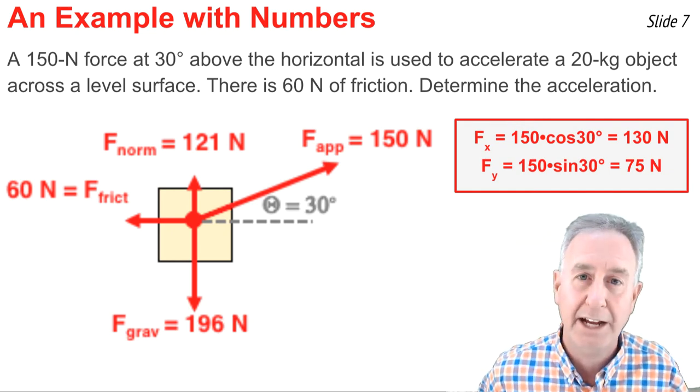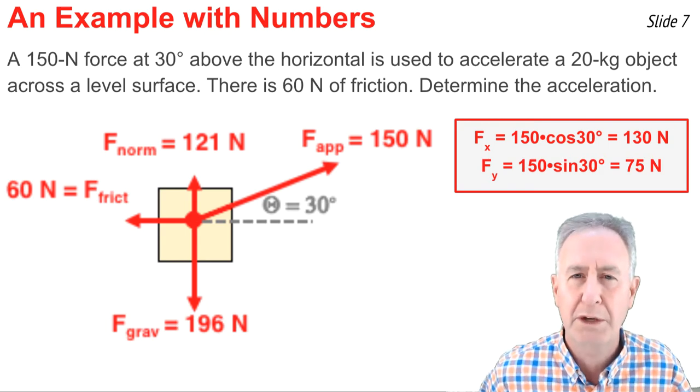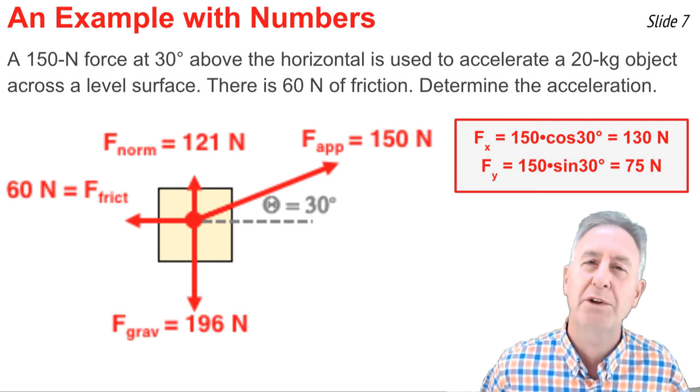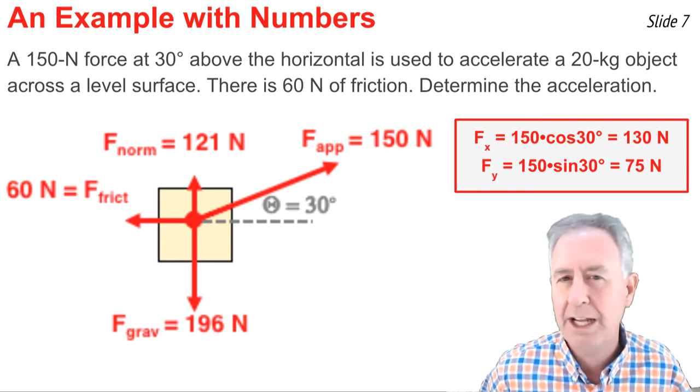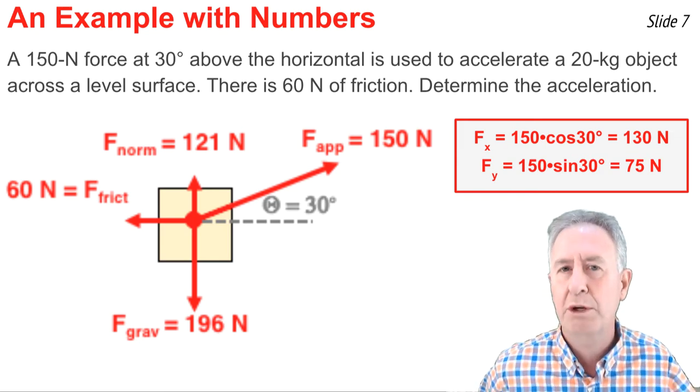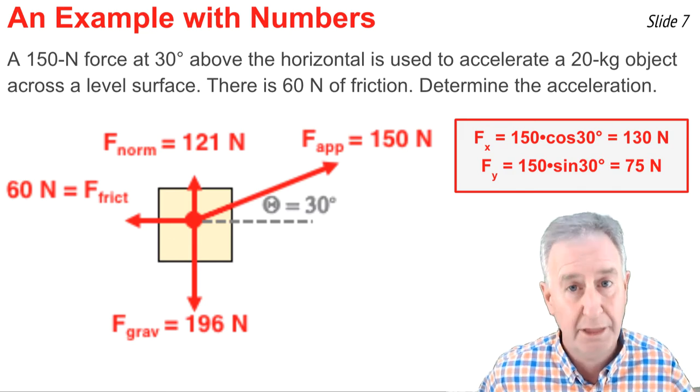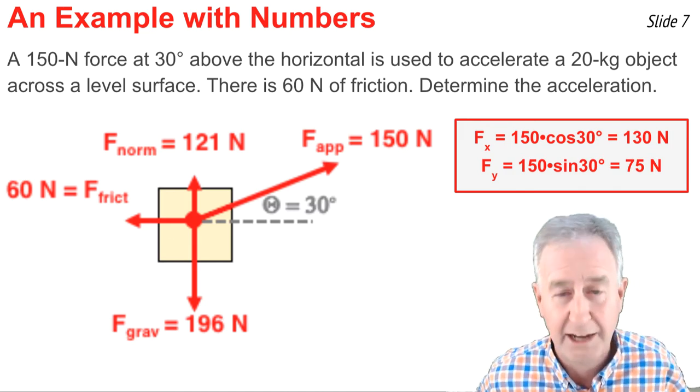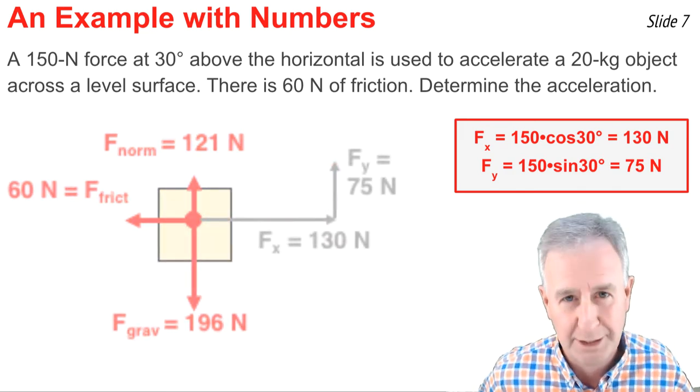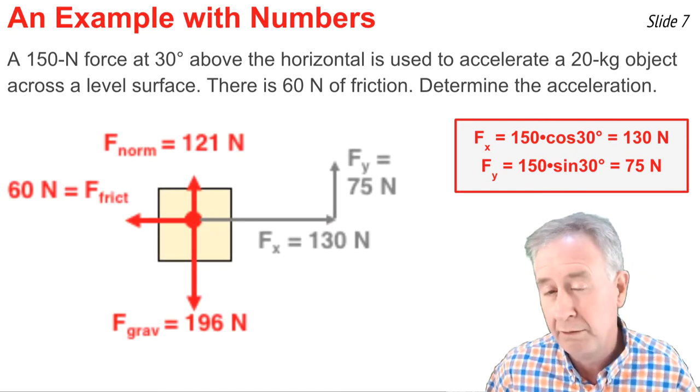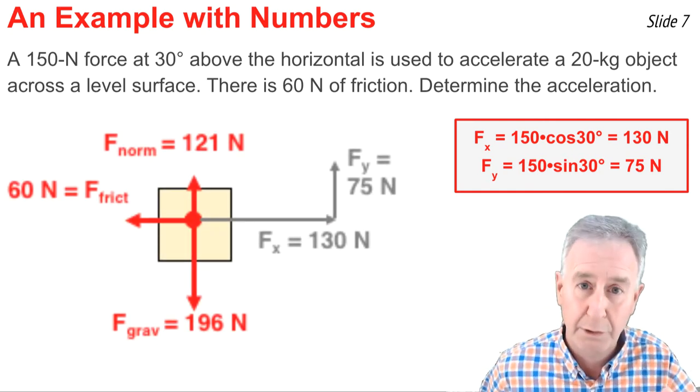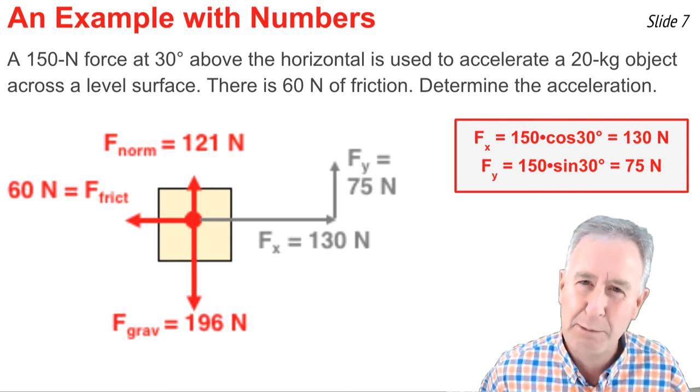I end up getting Fx equal to about 130 newtons and Fy equal to 75 newtons. Now I can do the substitution. I can replace one player with another player. I'm going to pull the F applied and the theta out of the problem and put Fx and Fy in. And it looks something like this. Now I have all the forces horizontally and vertically, and I know that's an easy problem.